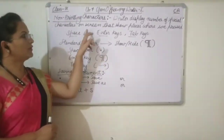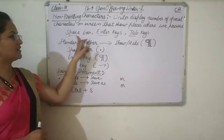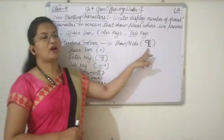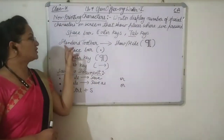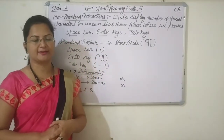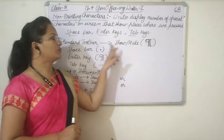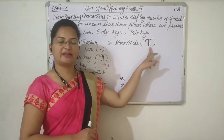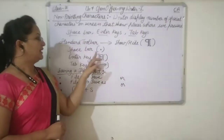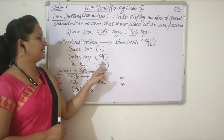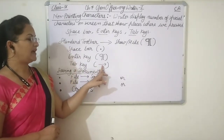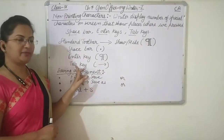If you want to see where we have pressed the space key, enter key, or tab key, then we will use the Show/Hide button. You will be able to see the Show/Hide button in the standard toolbar, which is below the formatting toolbar. When we click on the Show button, we will be able to see a dot in place of space, a special character in place of enter key, and an arrow in place of tab keys.